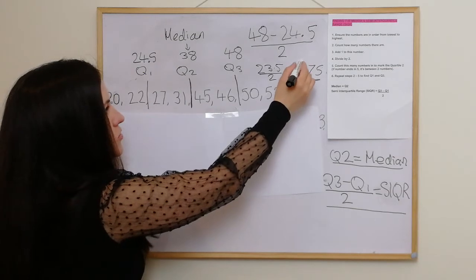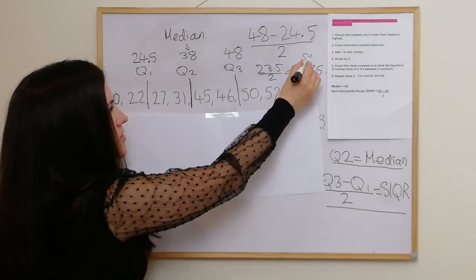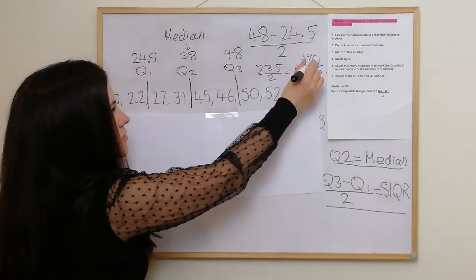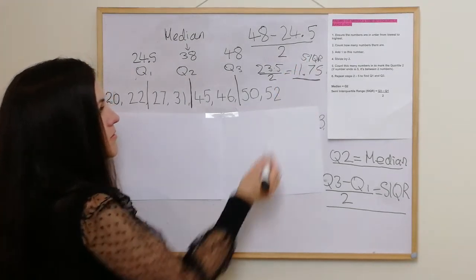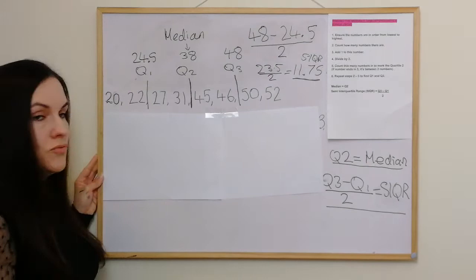Our median is Q2. So the median is 38. To get our semi-interquartile range, we do Q3 minus Q1 divided by 2: 48 minus 24.5 divided by 2, giving 23.5 divided by 2, which is 11.75. So the semi-interquartile range is 11.75.